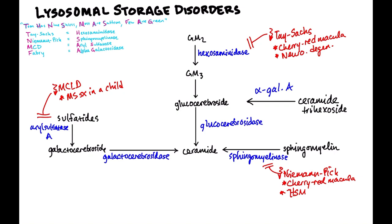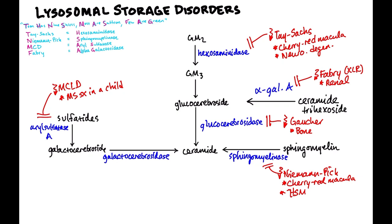Fabry disease is at alpha-galactosidase A, and there are two key things to remember: first, it's X-linked recessive — the only one of these that is; and second, think renal. Next, Gaucher disease involves glucocerebrosidase — remember bone. Finally, galactocerebrosidase deficiency causes Krabbe disease — remember globoid cells.